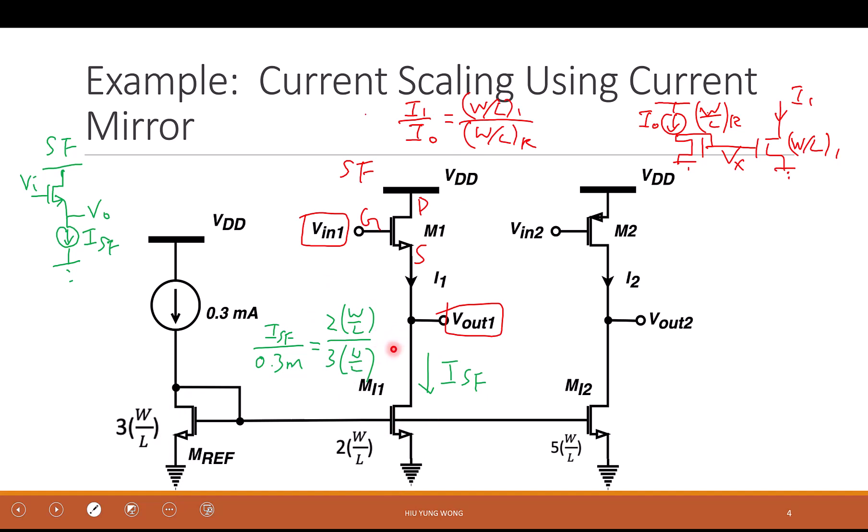So based on this, you just do the multiplication. You get ISF, which is I1, of course, equals to 0.2 milliampere. Is this clear?